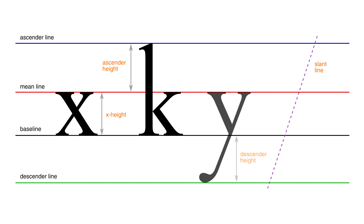For letters that descend below the baseline, we have, as you might guess, the descender line. The height of the descender is the distance between the baseline and the descender line.